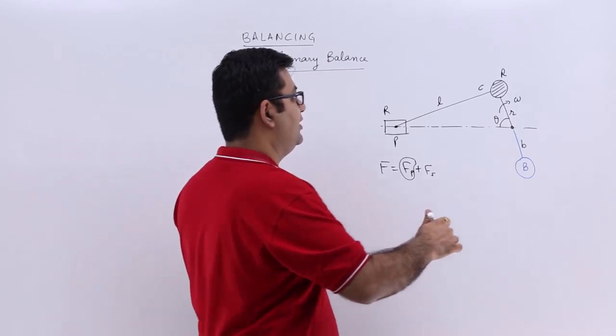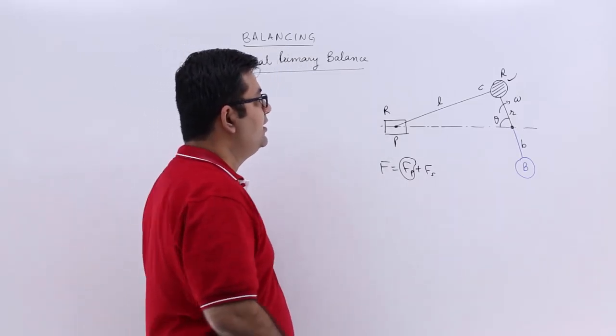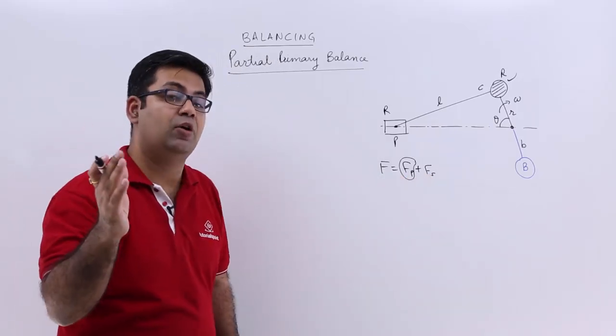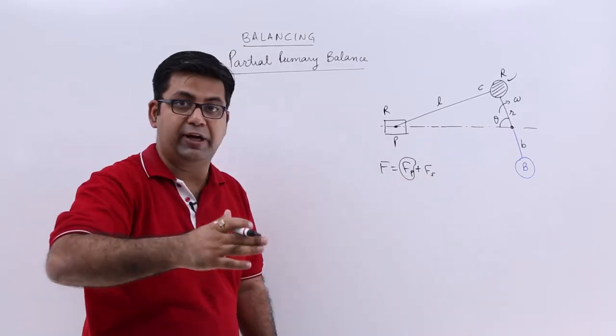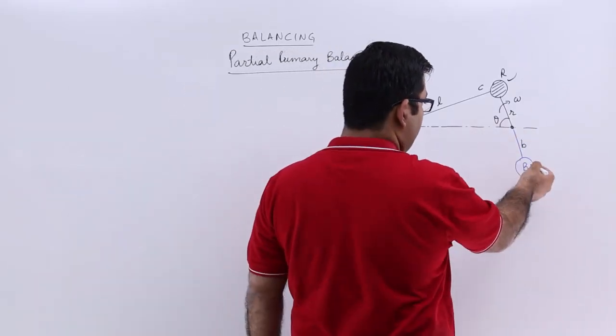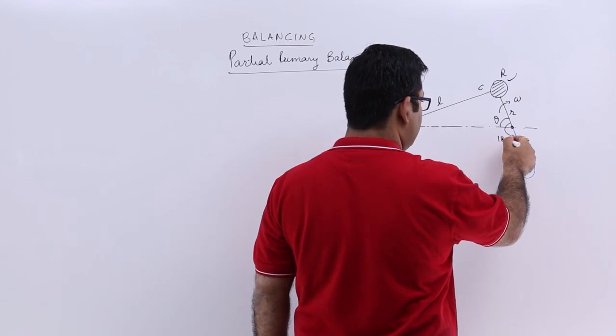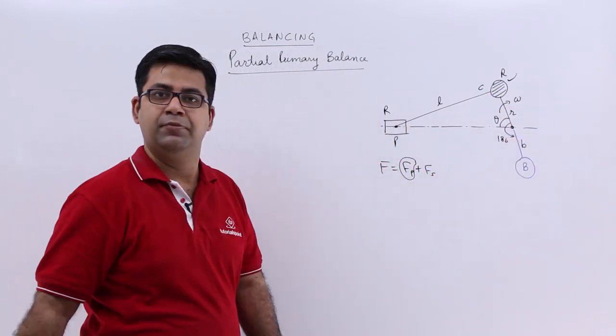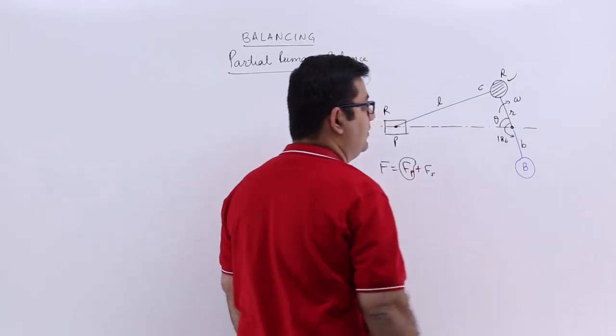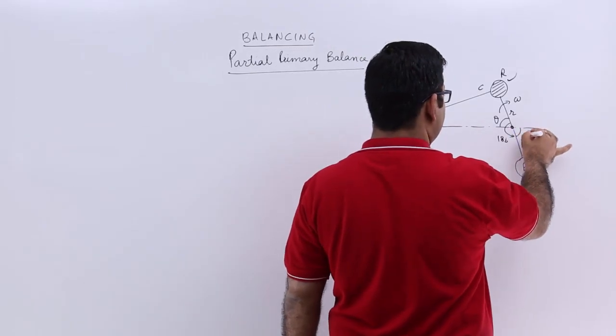Now to balance this part, this is resembling the case of a single rotating mass. So to balance that out, just put another balancing mass at 180 degrees to that. So I put at a radius of small b a mass B, capital B. So this also becomes theta.